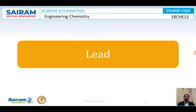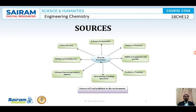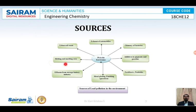Next, we have lead pollution. Let us see what are the sources, ill effects, and how to control lead pollution. The main sources of lead in the environment are: exhaust of automobiles, chimneys of factories, additives in pigments and gasolines, fertilizers and pesticides, metal painting, plating and finishing operations, effluents from storage battery industry, melting and smelting of ores, and urban soil waste. These are the major sources for lead pollution.